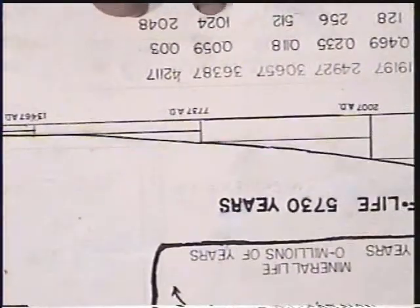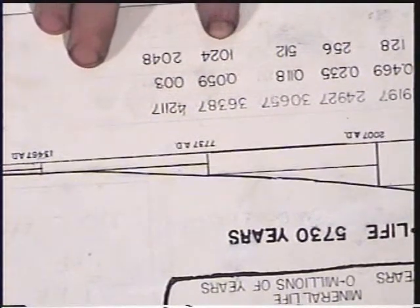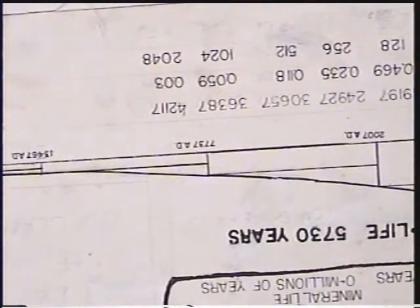So, over at 36,387 A.D., I've got no representation of what it's going to look like. And I'm thinking there's still something there. On my chart here, it says that in 36,387 A.D., there should be a beta emission every 1,024 seconds.